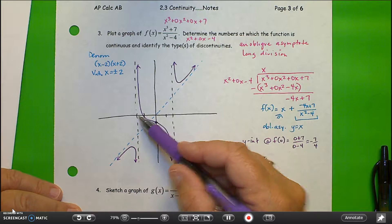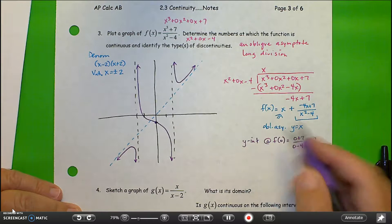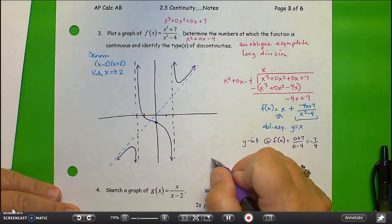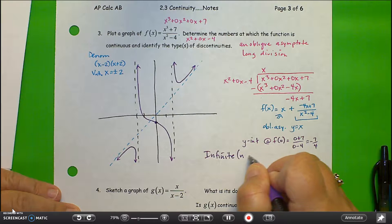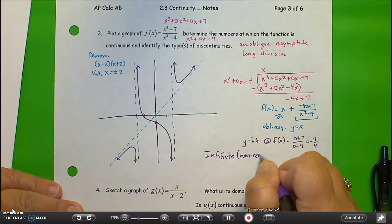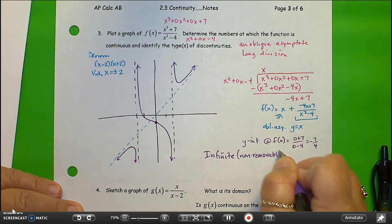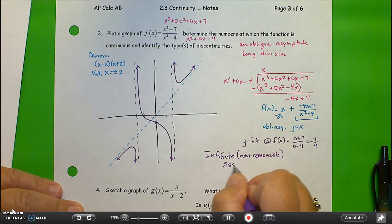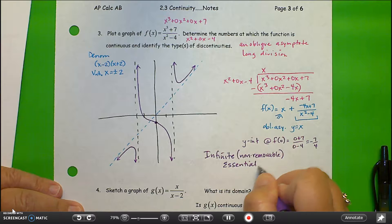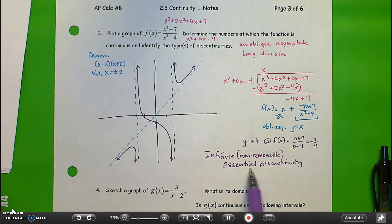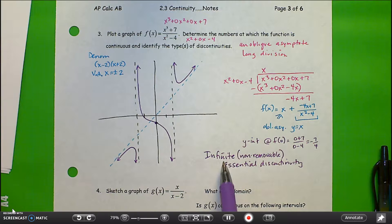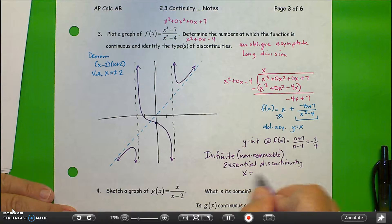The discontinuities are at negative 2 and positive 2. It's actually an infinite discontinuity. It's also non-removable. It's also essential. So we would basically want to say essential discontinuity, and we would also want to define it as an infinite discontinuity at x equals plus or minus 2.